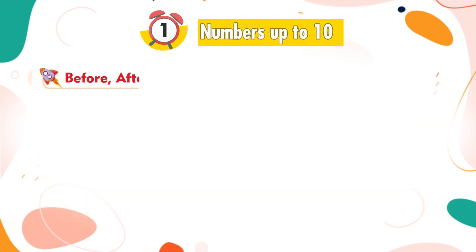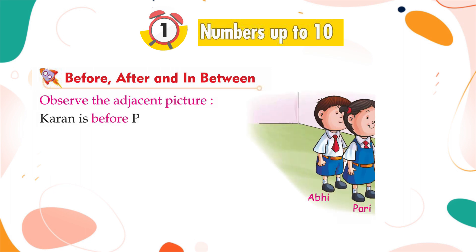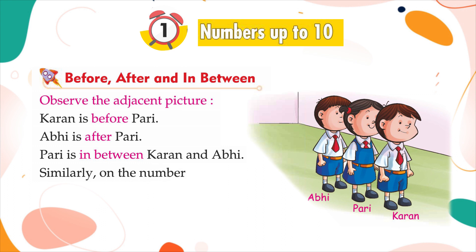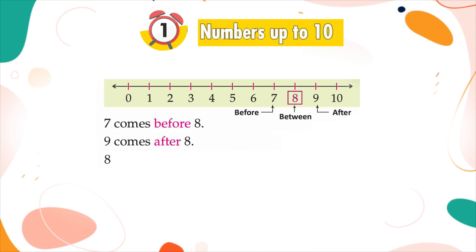Before, after, and in between. Observe the adjacent picture. Karan is before Pari. Abhi is after Pari. Pari is in between Karan and Abhi. Similarly, on the number line, seven comes before eight. Nine comes after eight. Eight comes in between seven and nine.